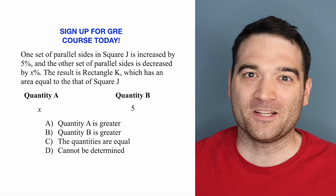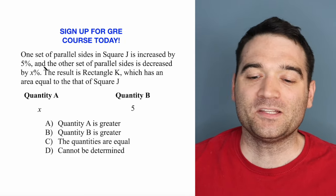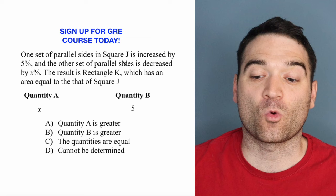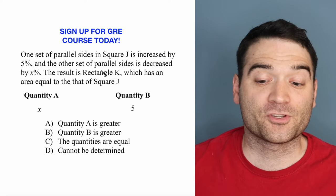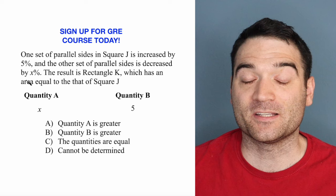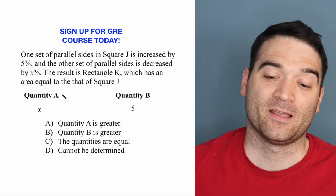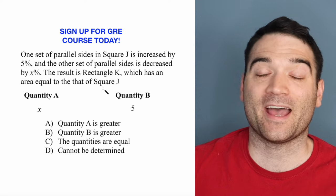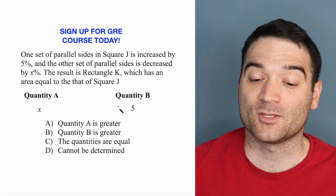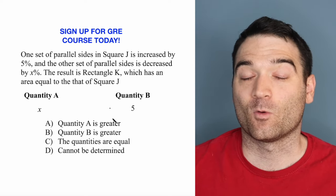Here's a GRE geometry question. Let's take a look. One set of parallel sides in square J is increased by 5%, and the other set of parallel sides is decreased by X%. The result is rectangle K, which has an area equal to that of square J. So we want to know what's greater, X or 5.